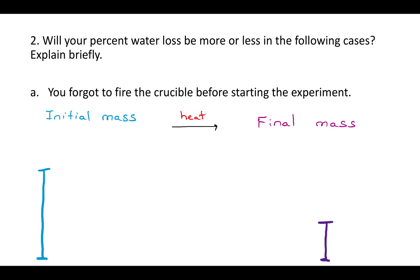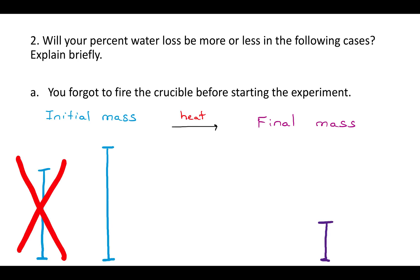First scenario: you forgot to fire the crucible before starting the experiment. You fire the crucible to clean off any impurities — whether it's moisture sticking to the crucible or some other impurity. If you don't do that, you're not just going to have your hydrate in the crucible; you'll have your hydrate plus the impurities. So the initial mass is going to be bigger than it would be if you just had the hydrate. The question is, how does that affect the difference between the initial and the final mass, which is the percent water loss? Is that bigger or smaller than it would have been?